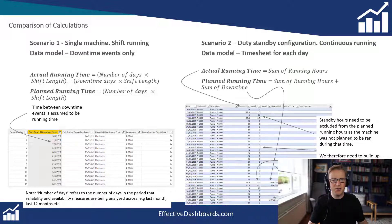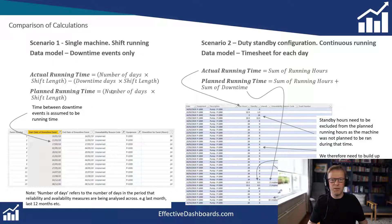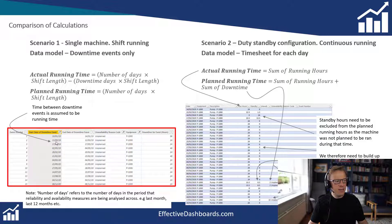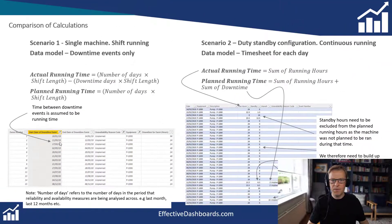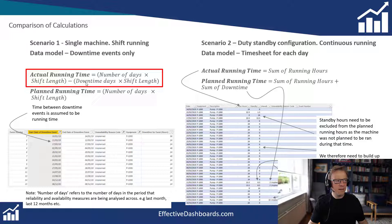Before we go into Power BI and start creating measures, I want to go through a few slides so we're clear on the definitions. This slide shows the difference between the calculations for scenario one — where the machine was running all the time when it wasn't down — versus scenario two with the standby configuration. In scenario one, the data only captured downtime events, so between events we assumed the machine was running, and the run hours equaled the number of days times the shift length minus downtime days times the shift length.